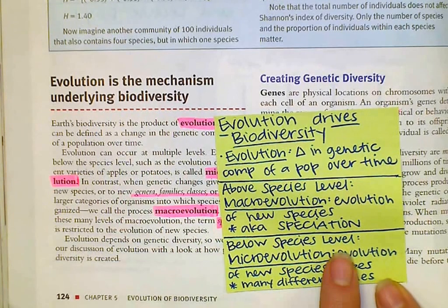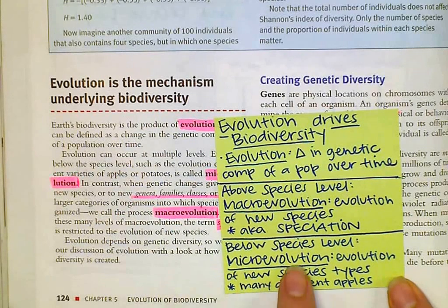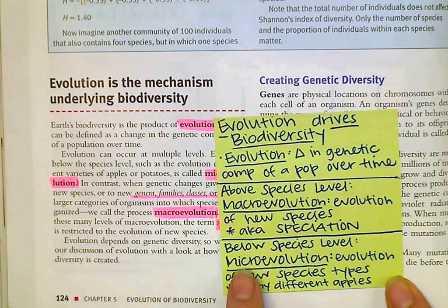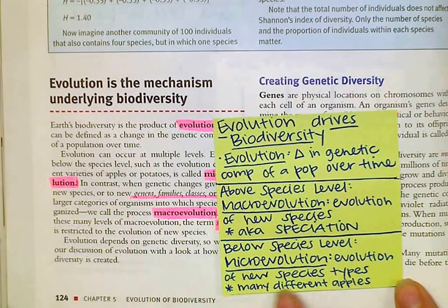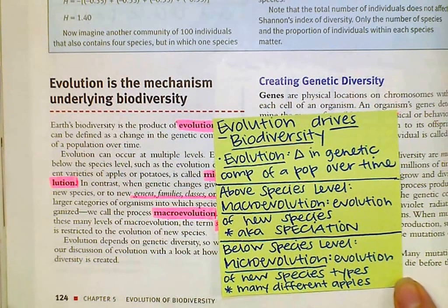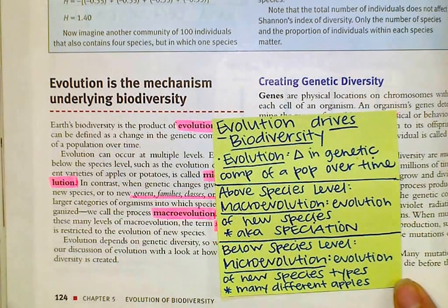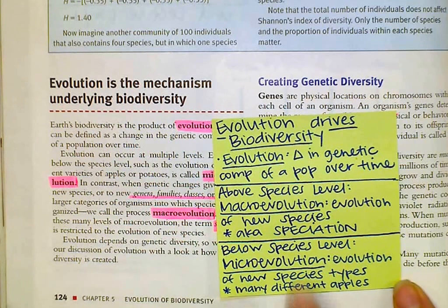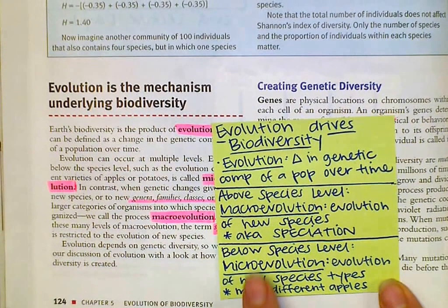Now below the species level, like within a single species, we have this thing called microevolution. Micro means small, macro means big. Microevolution is going to be the evolution of new species types. So we have many different types of apples, many different types of squirrels, things like that. We're not giving rise to a new species — we are just having a new type of the same species. So speciation is macroevolution, and new species types is microevolution.